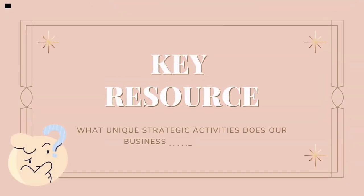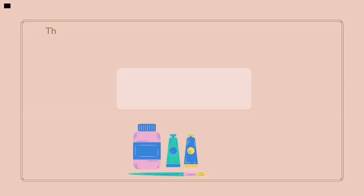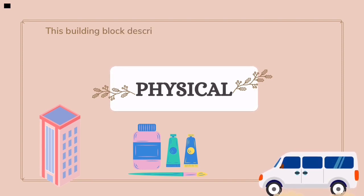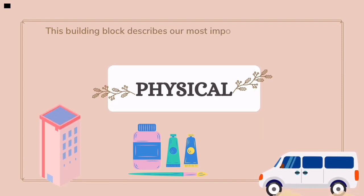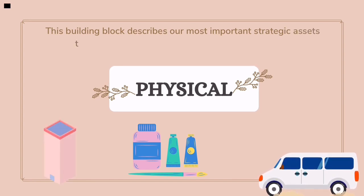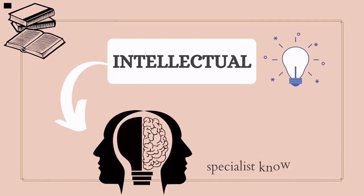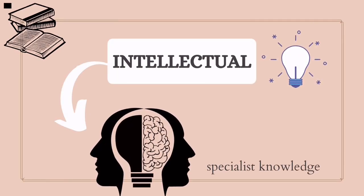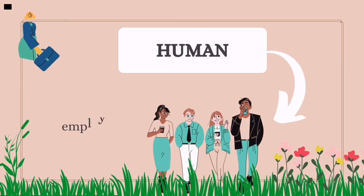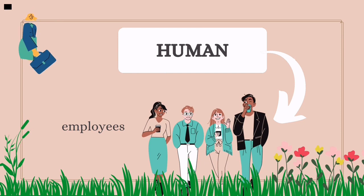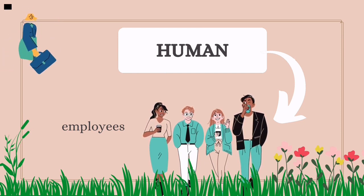Key Resources — what unique strategic assets does our business have or need? This building block describes our most important strategic assets required to make our business model work. Number one is physical, such as building, raw material, and vehicle. Second is intellectual, for example specialist knowledge. The last one is human, which is employees. All companies need employees to run their business smoothly.